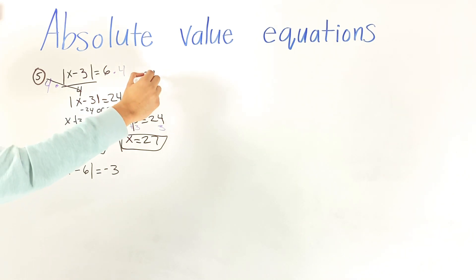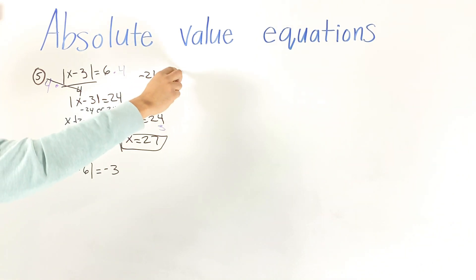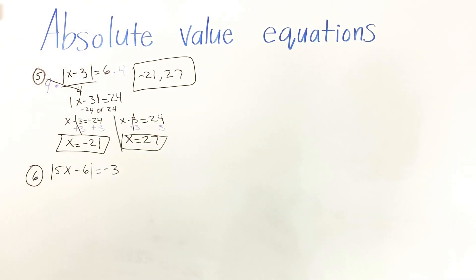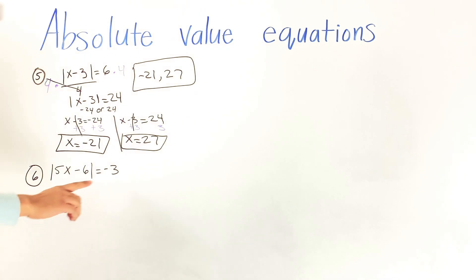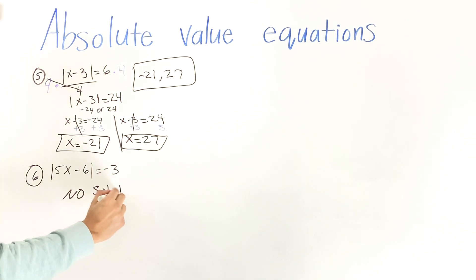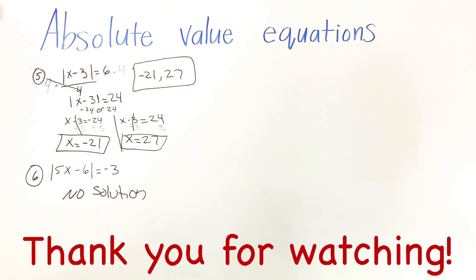So the answer for number five is negative 21 or positive 27. For number six, we have the absolute value of 5x minus 6 equals negative 3. The absolute value function can never equal a negative number, so right away you should write your answer as no solution. You can only solve it when the result is zero or a positive number.